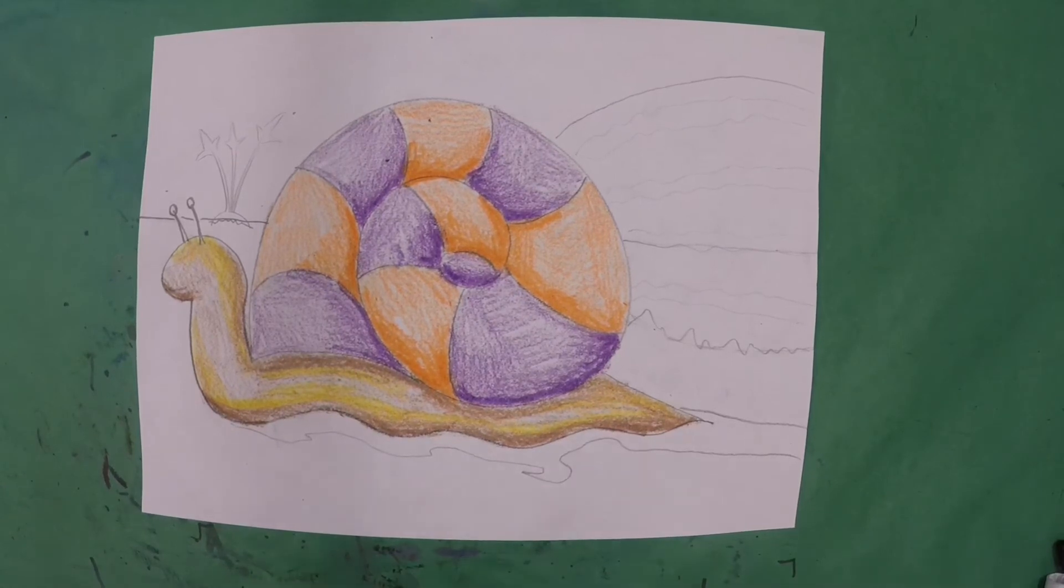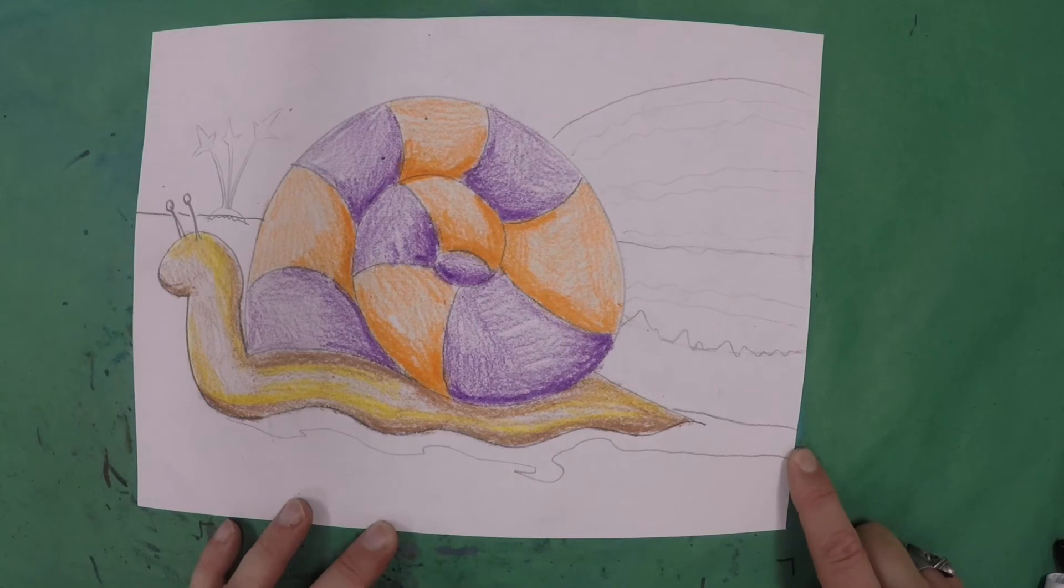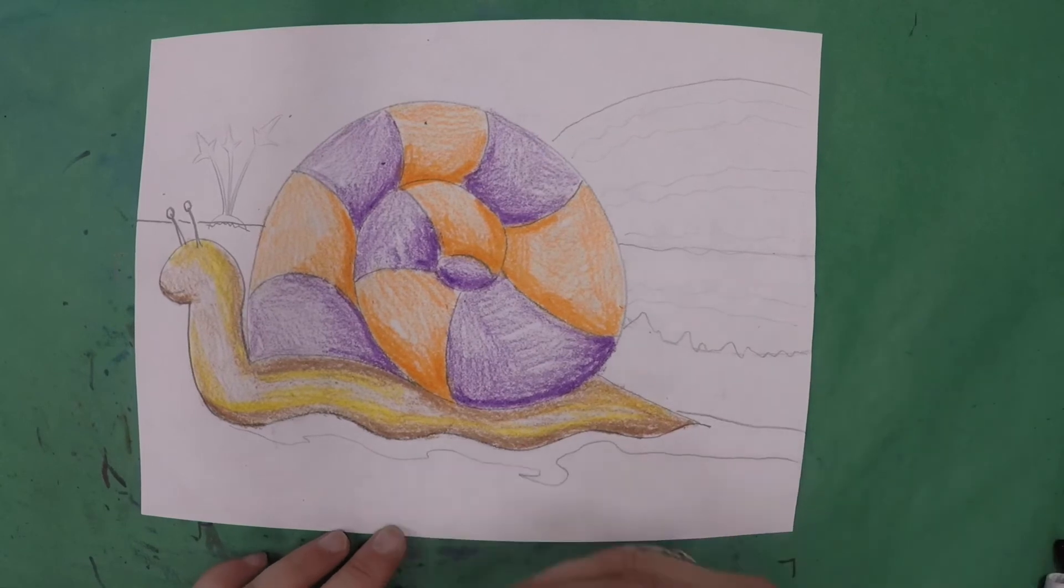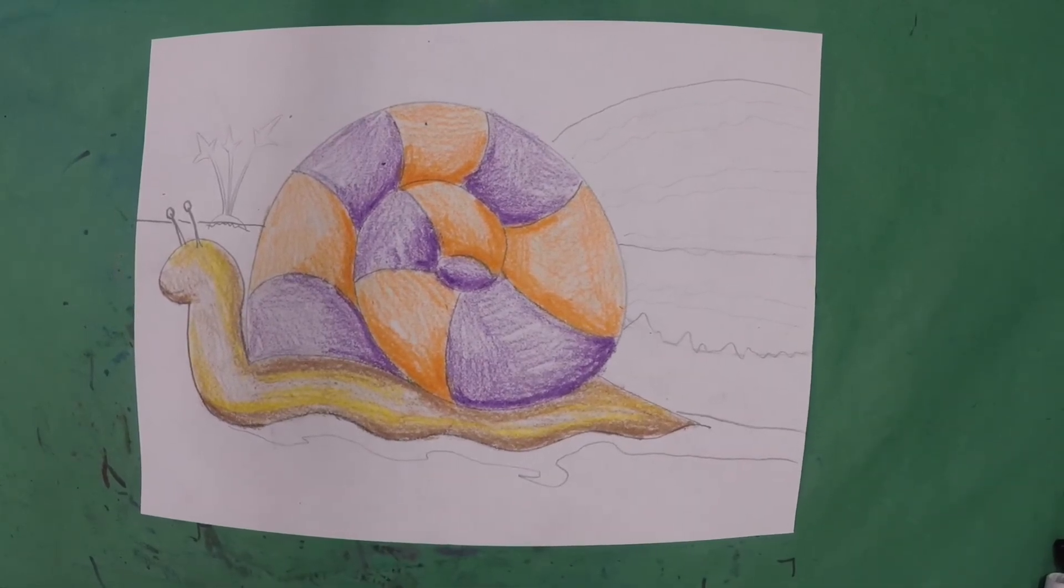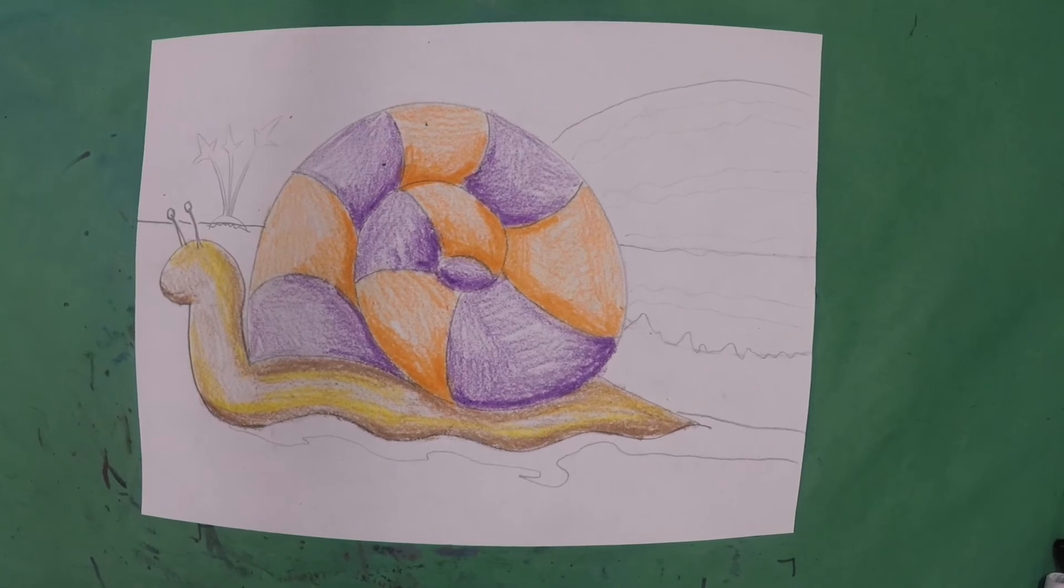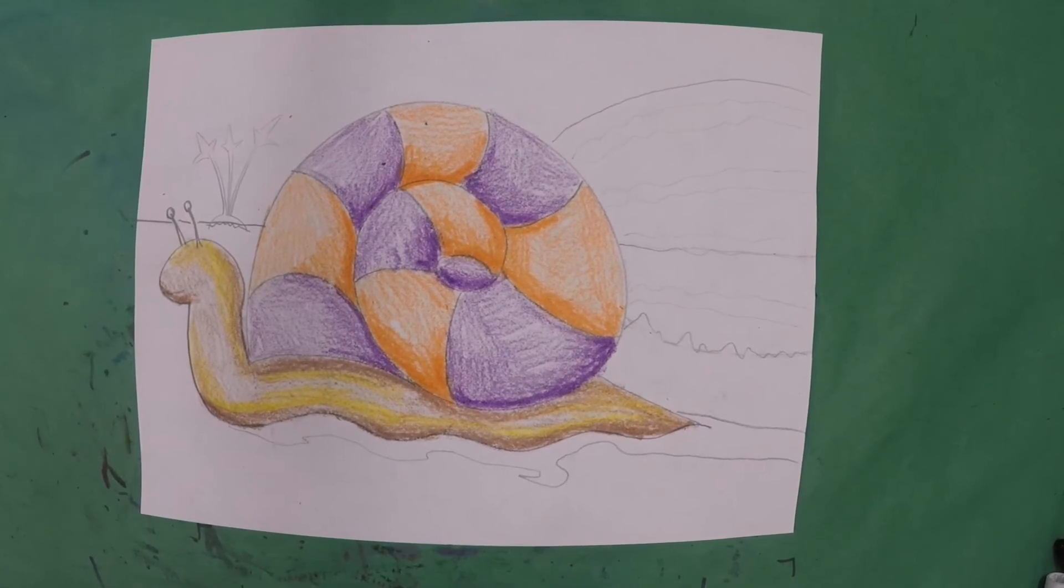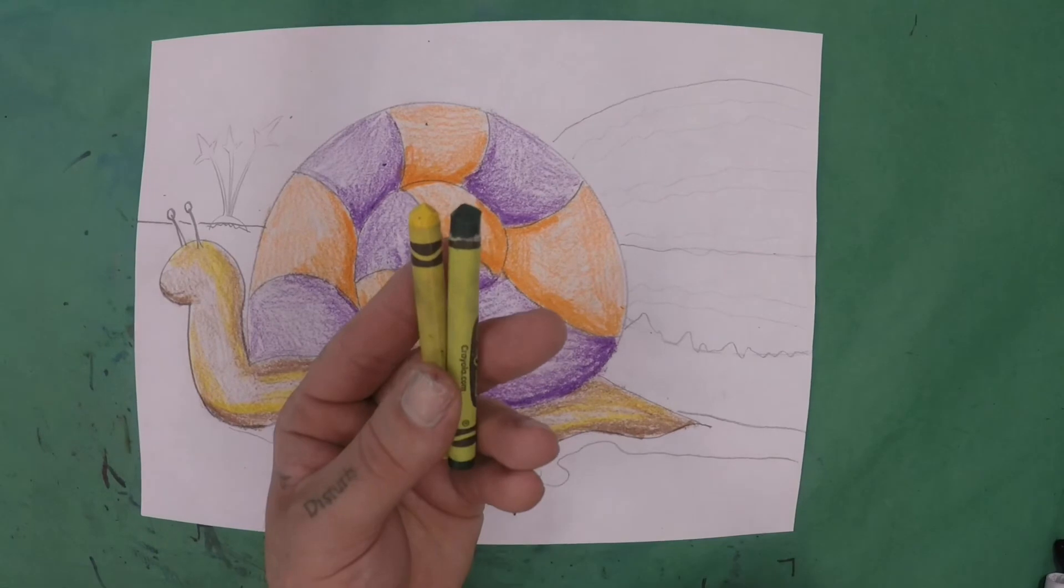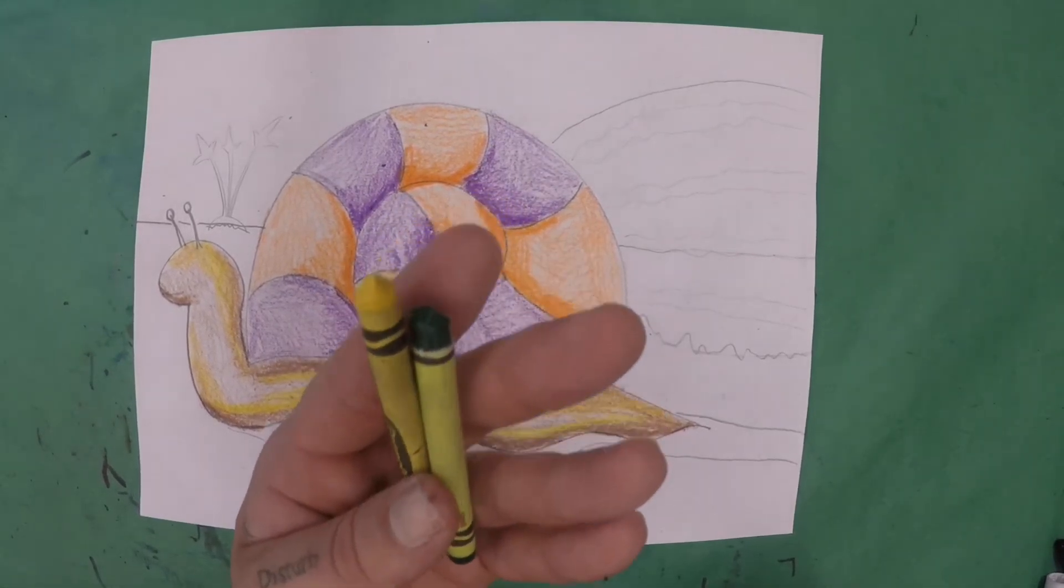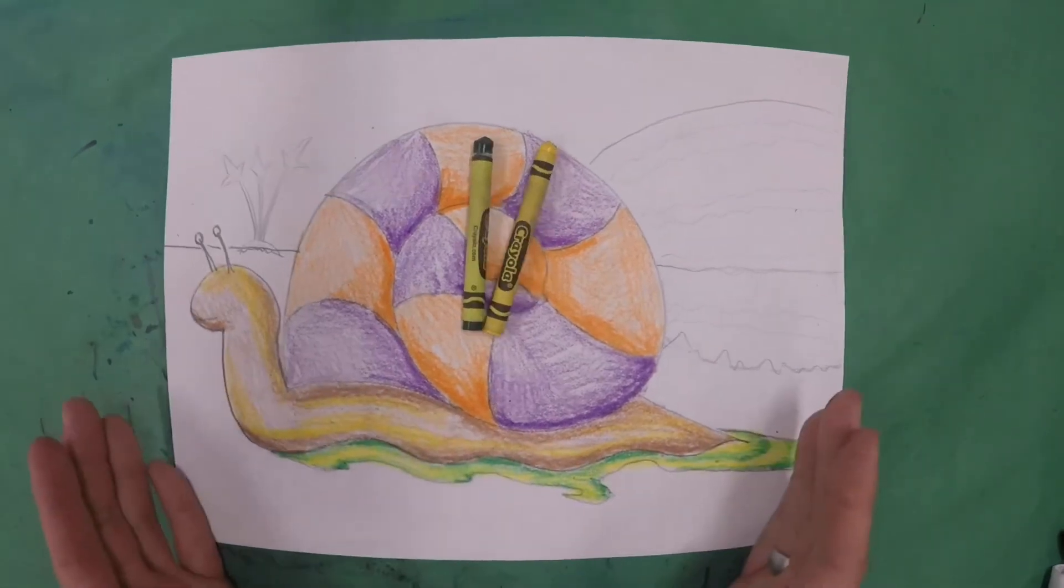Next thing we want to work on is this trail of slime that our snail is oozing out. This is what helps to show our movement, show which direction our snail is coming from. Now what do you think some good colors for the slime from our snail might be? Yeah, okay. Okay. Yeah, I like all those ideas. You make your slime for your snail any color you want. I want mine to look really, really gross. So I'm going to use a combination of green and yellow for mine. But again, you use whatever colors you want. So here, slime completed.